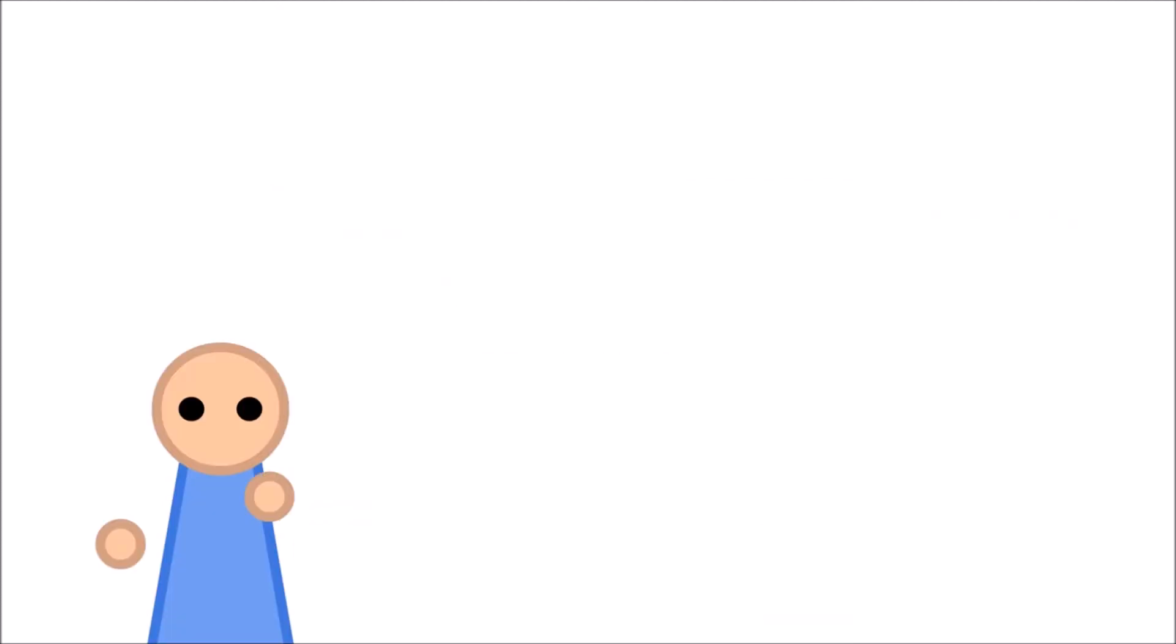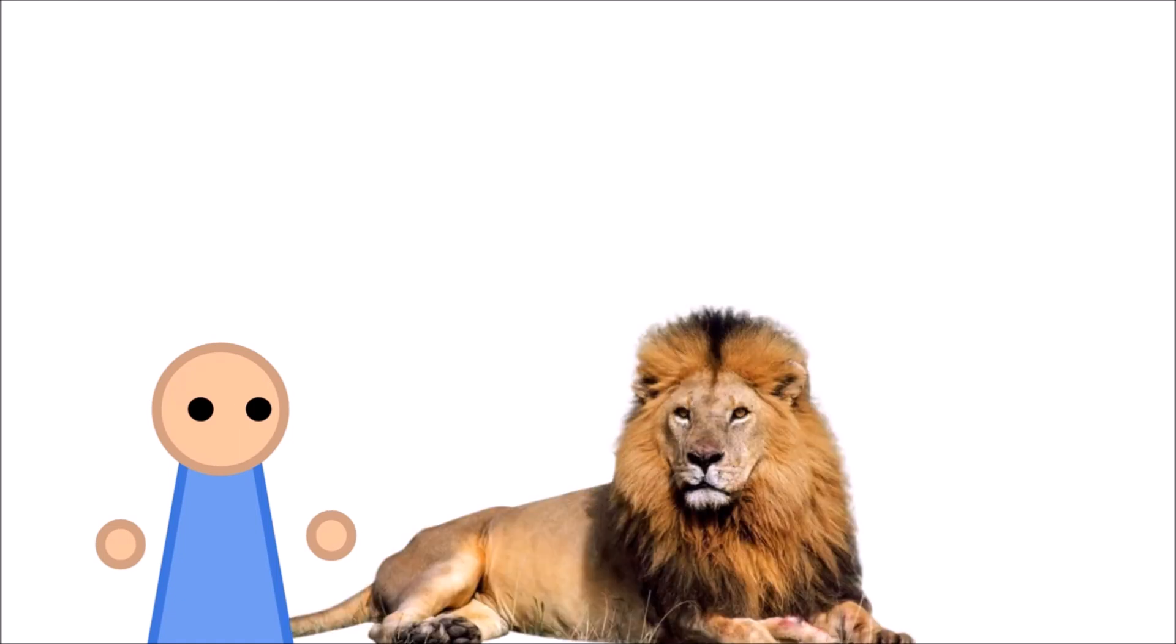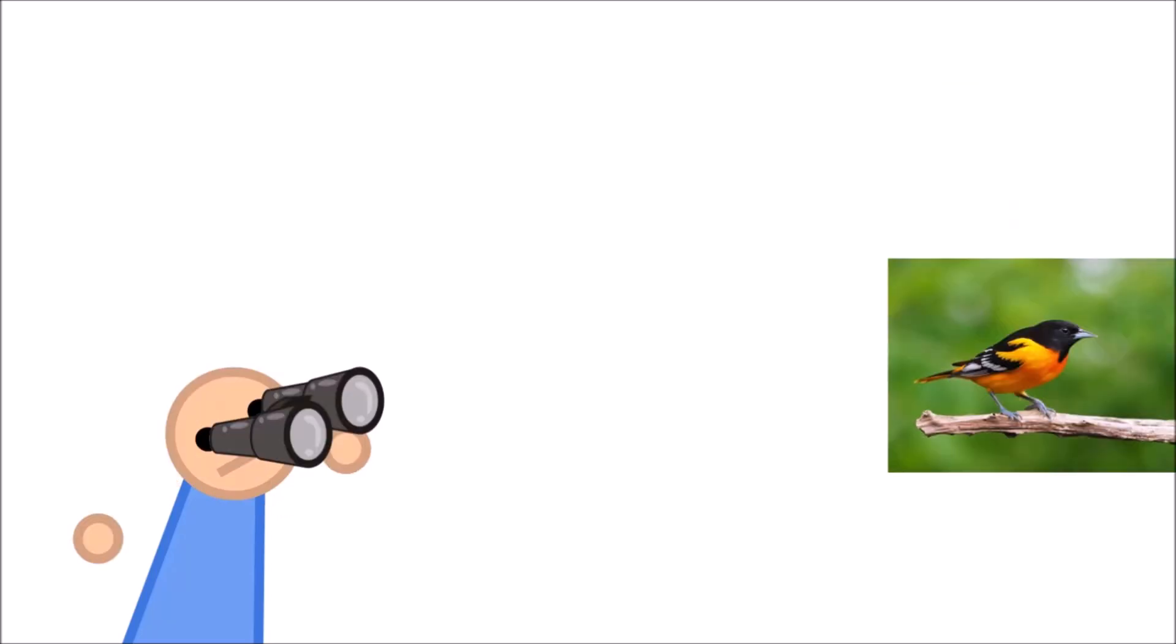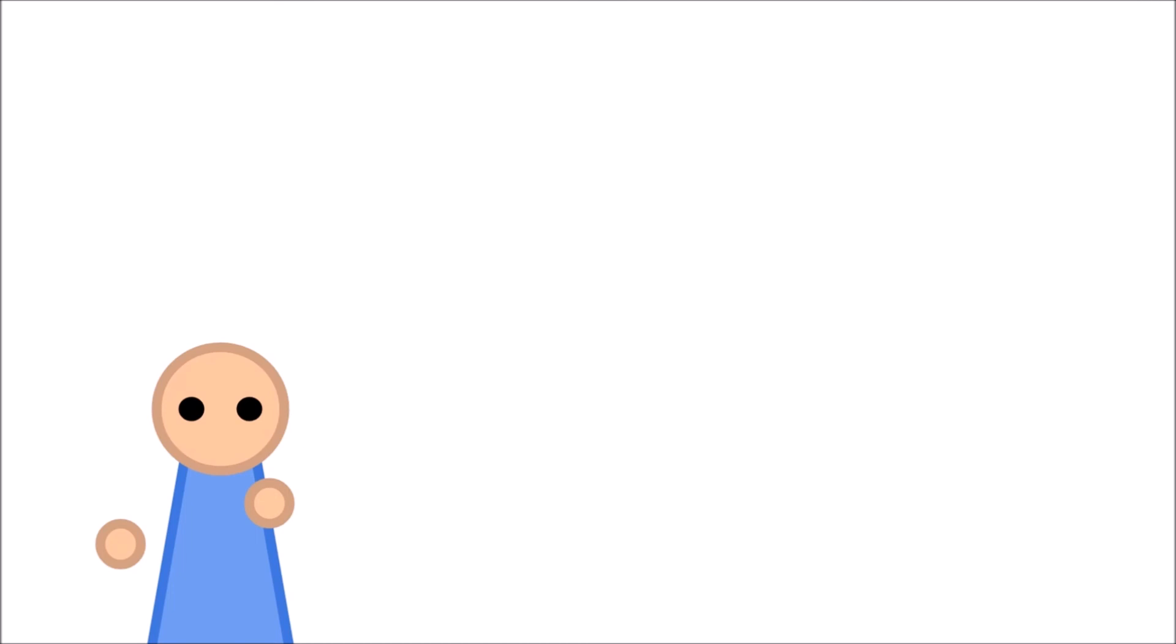And now, us, humans, vertebrates, chordates. Like arthropods, the chordates are also incredibly diverse, from lions to whales, frogs to birds, sharks to monkeys. Of all the phyla we've explored, I bet you would be able to name the most chordates. I also bet you would be able to tell me some of their key transitions.